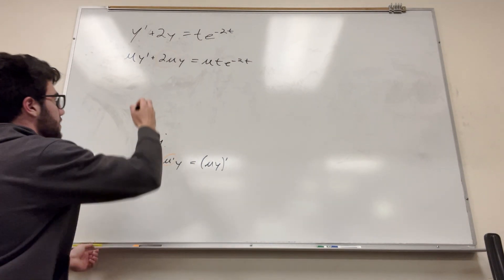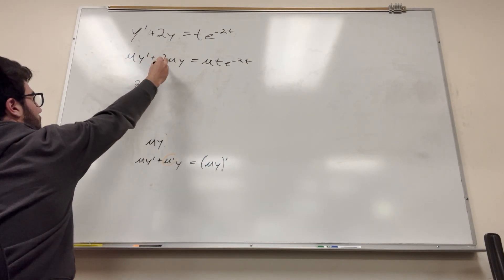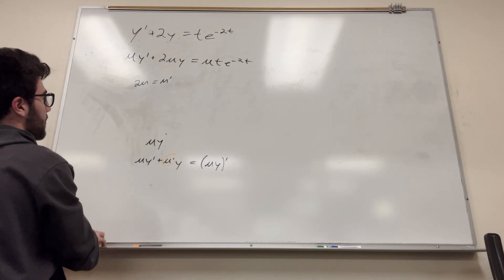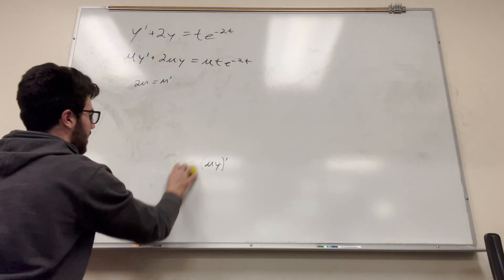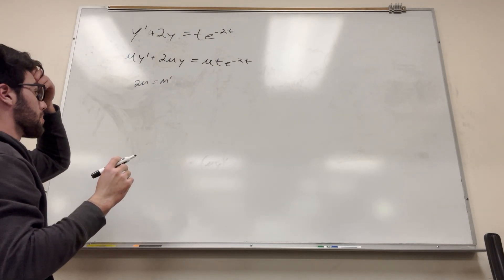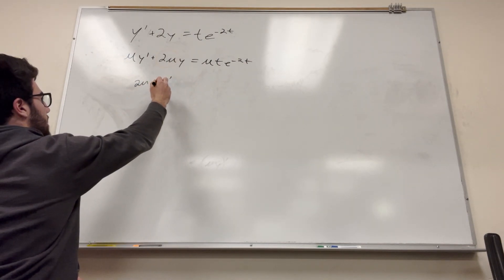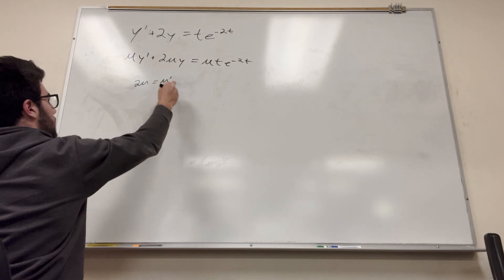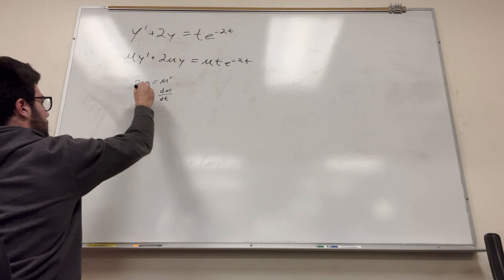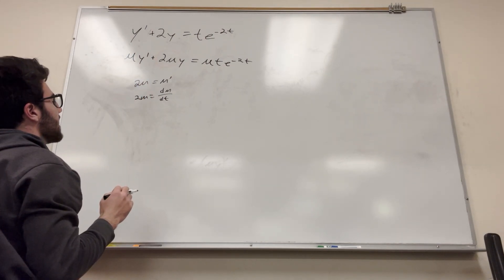So let's do it. If you want to do that, watch this. All you have to do is set 2 mu, what we have here, and we want it to be equal to mu prime. Now we just have to solve this, basically. So we've got another differential equation, a differential equation within a differential equation. So this is separatable, right? Let's write this as d mu over dt is equal to 2 mu.